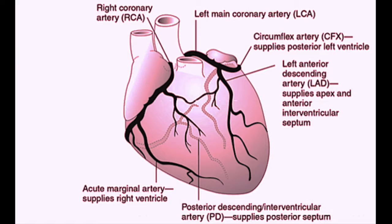In most patients, the RCA, or the right coronary artery, gives off the posterior descending artery, also called the interventricular artery. We normally call this the PDA. The PDA supplies the posterior septum. If the right coronary artery gives off the PDA, that's called a right dominant system.